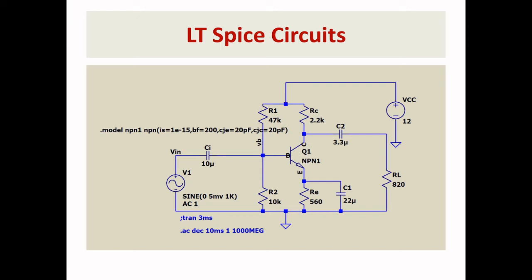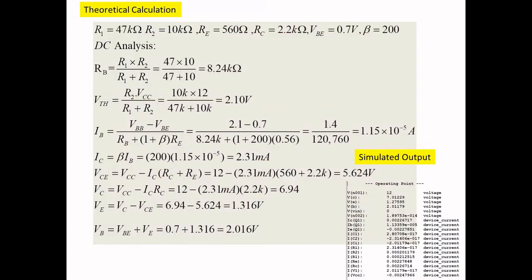The capacitance between base and emitter is 20 picofarads, and between collector and base is 20 picofarads. If these are not included in the model, you will not get the higher-frequency response. The internal junction capacitances cause the gain dip in the high-frequency region, as stated earlier. The DC analysis has also been done and cross-checked with the simulation output.